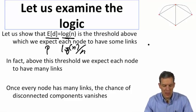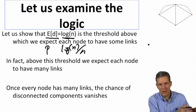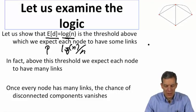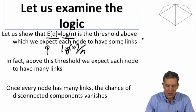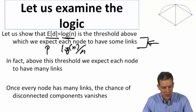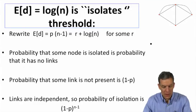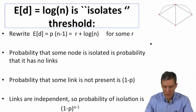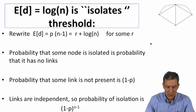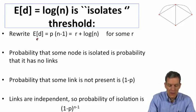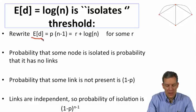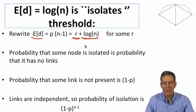In fact, this is the threshold above which we expect nodes to have many links, and once each node has many links, the chance of having disconnected components vanishes. So first, we're going to write the expected degree as some function R plus log(N). The expected degree is actually some R plus log(N).